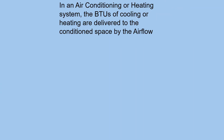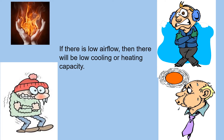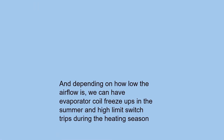In an air conditioning or heating system, the BTUs of cooling or heating are delivered to the conditioned space by the airflow. If there is low airflow, then there will be low cooling or heating capacity. And depending on how low the airflow is, we can have evaporator coil freeze-ups in the summer and high limit switch trips during the heating season.